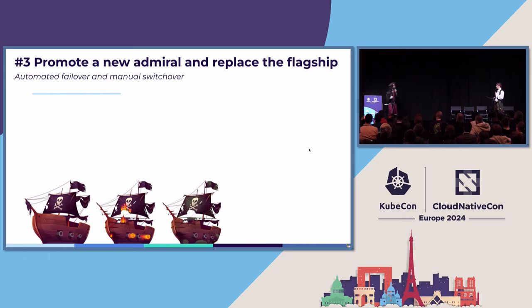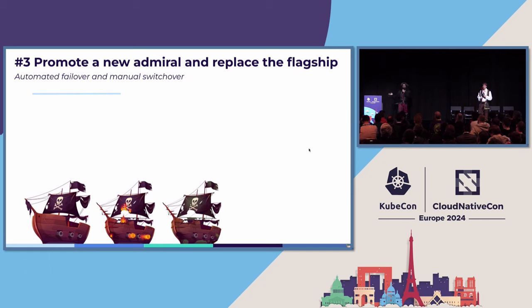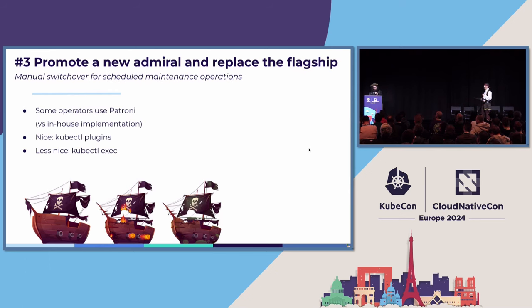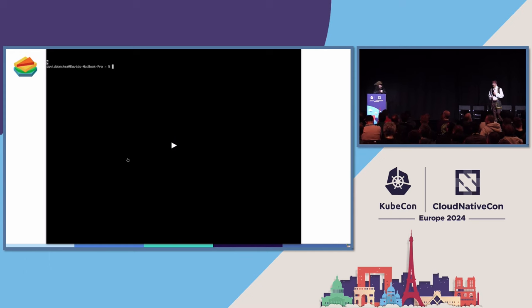When would we want to do a manual switchover? Little example: let's say I have a big Kubernetes cluster with like 100 database clusters and I have a node that I need to decommission. Maybe there's a hardware problem. Maybe my cloud provider just sent me a notification: hey, we're going to shut down that node in like 30 minutes. Basically I need to get rid of that node, which means moving all the stuff that's on the node. That's when you want to do a switchover so that you don't have any primary on that node.